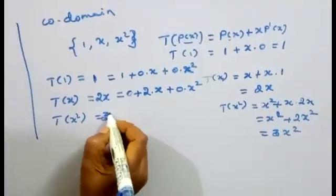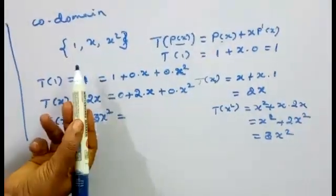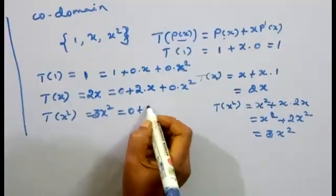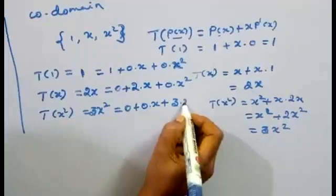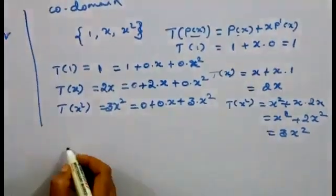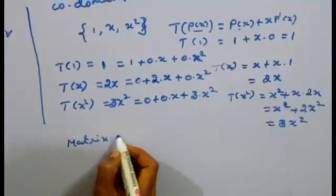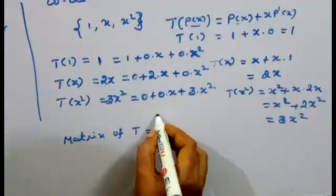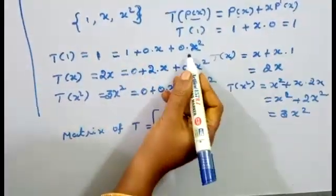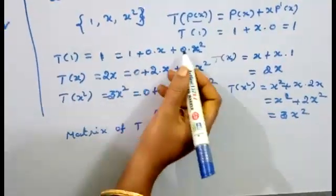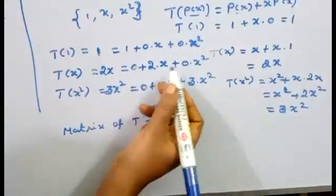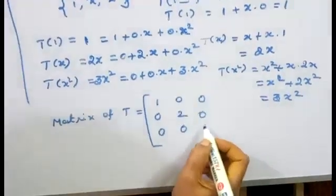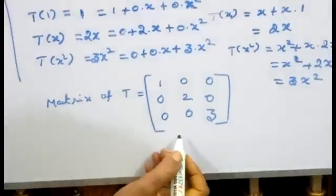So T(x²) = 3x². Expressing each result as a linear combination of the codomain basis: T(1) gives coefficients (1,0,0), T(x) gives (0,2,0), T(x²) gives (0,0,3). We mark the matrix of T with these coefficients.